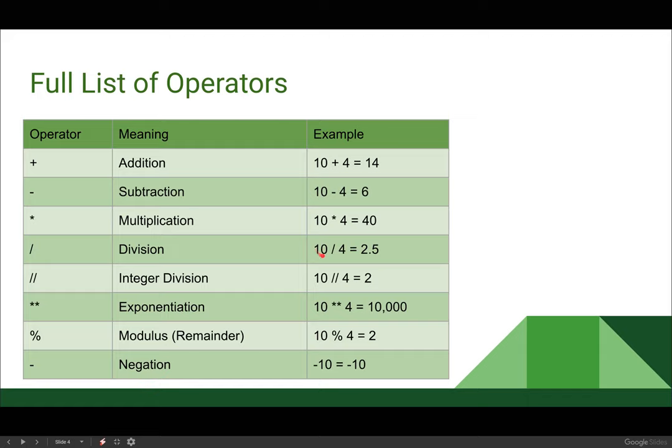So if I say 10 divided by 4, that'll give me 2 and a half. If I say 10 double divide 4, that's going to equal 2. It's just going to get rid of that decimal place, completely eradicate it. I can use double asterisks for an exponent. So I can say 10 to the power of 4, because the left side is the base, the right side is the power, 10 to the power of 4.